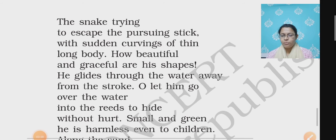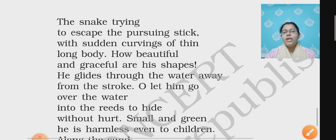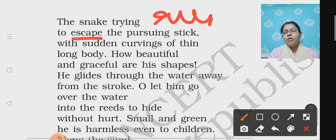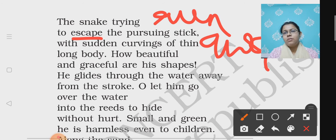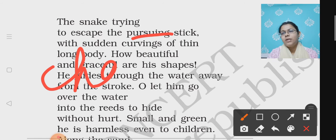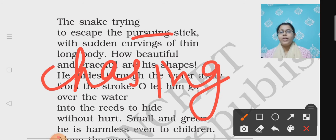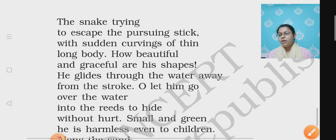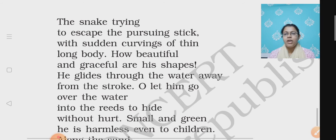Now let's see the explanation of the poem stanza by stanza. The first stanza: 'The snake trying to escape the pursuing stick.' So what is the snake trying to do? It is trying to escape — escape means to run or hide away from somebody. It is trying to run away from the pursuing stick. Here, 'pursuing' means chasing or following. The snake is trying to escape the pursuing stick, that means it is trying to run away from the stick which is following it to kill it.